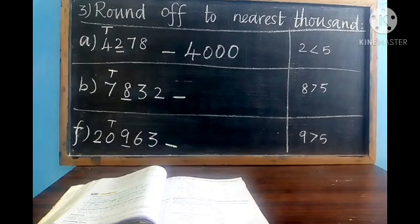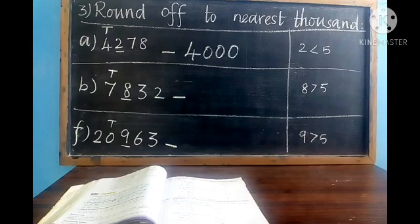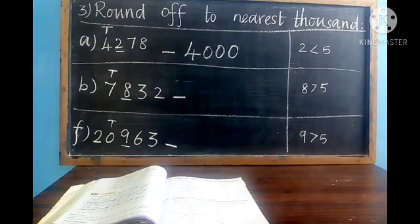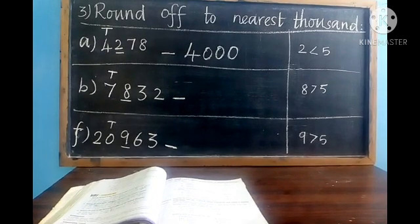If in the hundreds place value 6 is there, what would be the next nearest thousand? It would be 5000, because 6 is greater than 5. Now can you write the answers for B and F sums? We can check the answers.